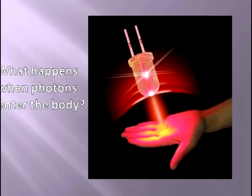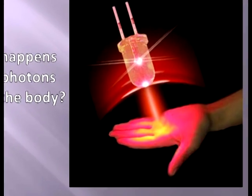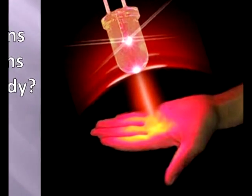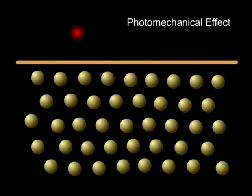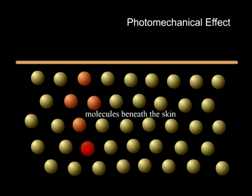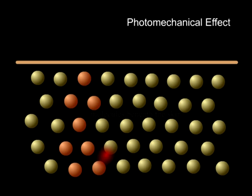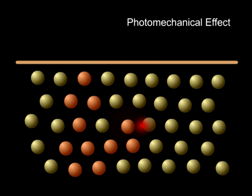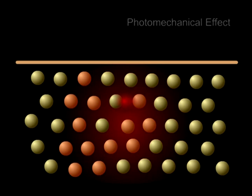The first effect is called photomechanical. As each photon enters the body tissue, it actually bounces around, hitting some 10,000 substrate molecules, making your molecules vibrate like ripples on water.